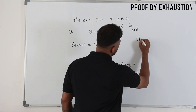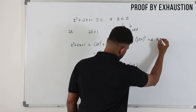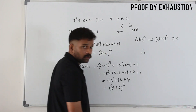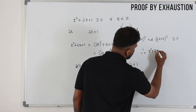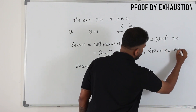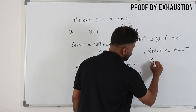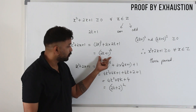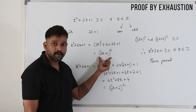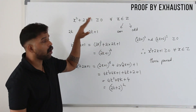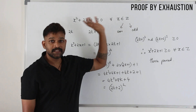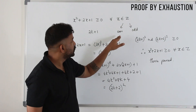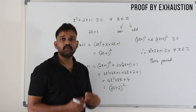You can write both (2k + 1)² and (2k + 2)² as greater than or equal to 0. Therefore, x² + 2x + 1 ≥ 0 for all x belonging to ℤ. Hence true. Though we have used techniques from proof by deduction, this is proof by exhaustion because you are proving this for all cases — dividing integers into two categories and proving each.